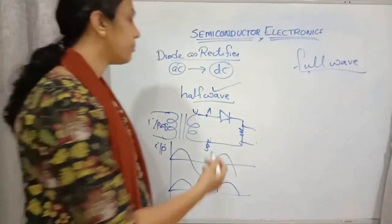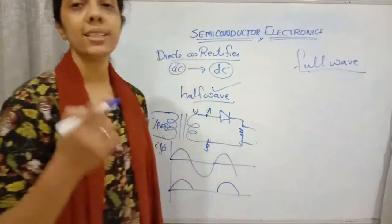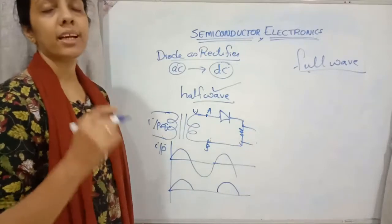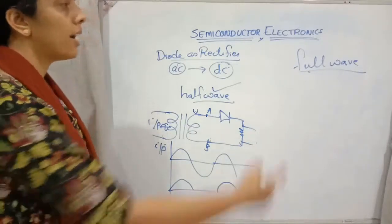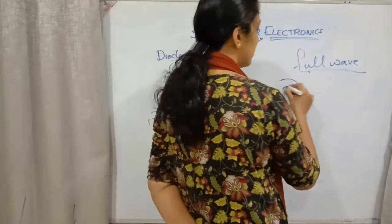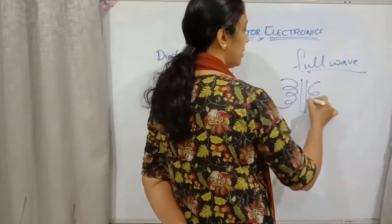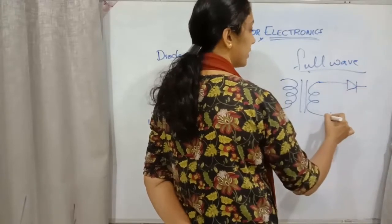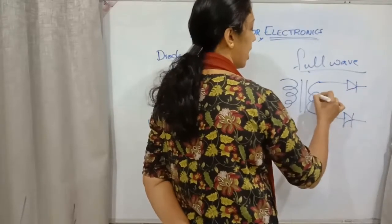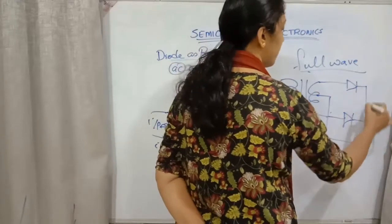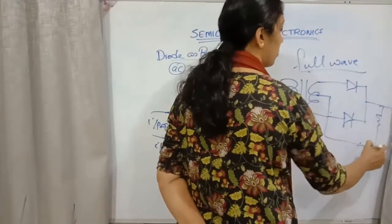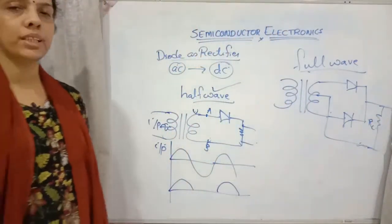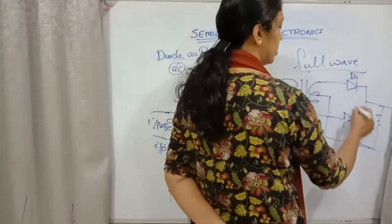If we use two diodes with a center tap transformer, connecting from the center as well, that kind of rectifier is called a full wave rectifier. From the transformer, AC is given; one diode D1 is connected on one side and diode D2 on the other side, and the output is taken from both. Load resistance is connected at the output.